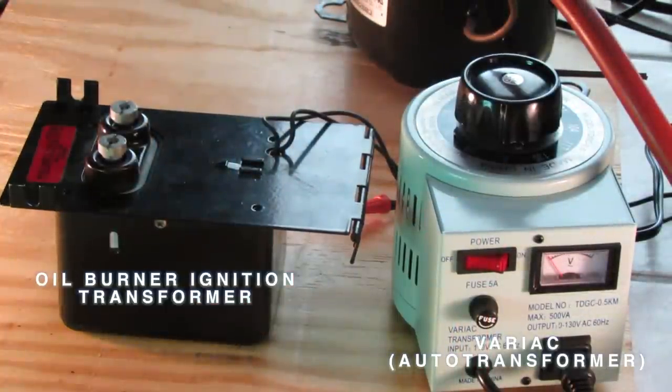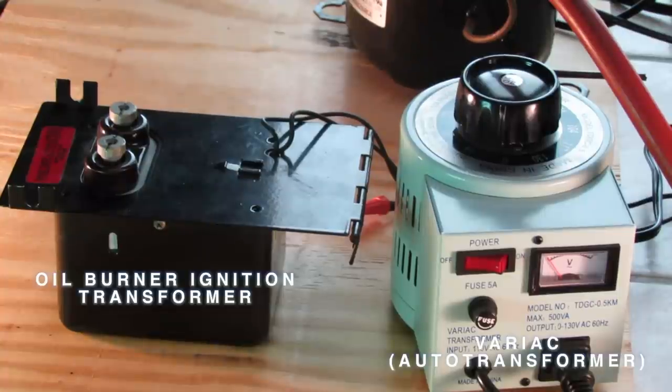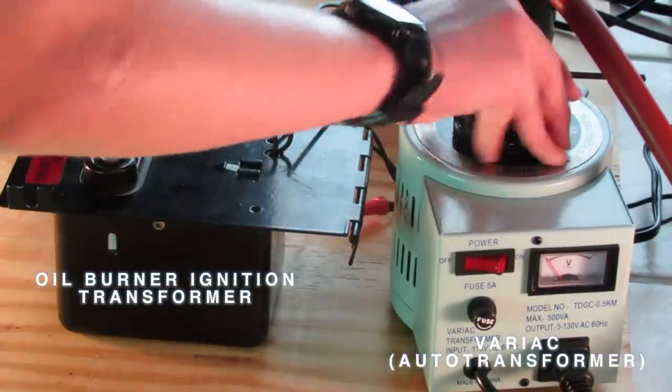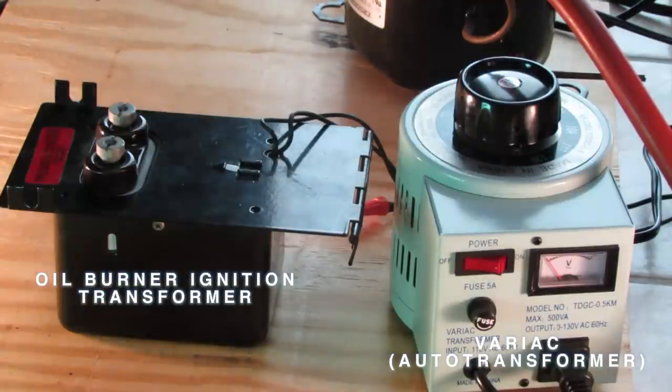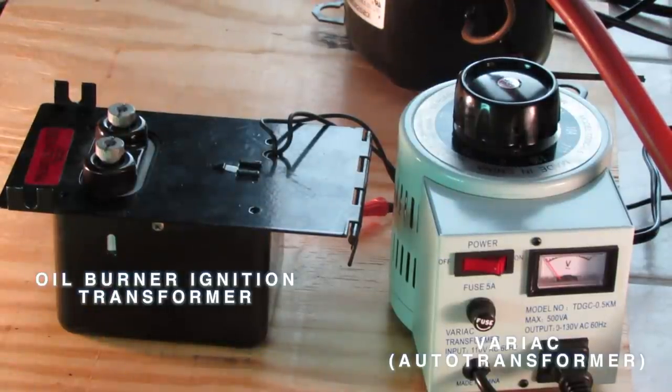The power supply is made using a Variac and an oil burner ignition transformer. The Variac, also known as an auto transformer, allows you to vary the voltage coming from a wall outlet without altering the waveform. The output of the Variac goes directly into the oil burner ignition transformer.